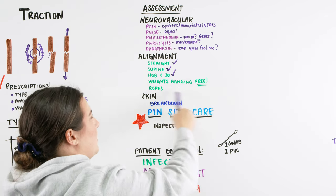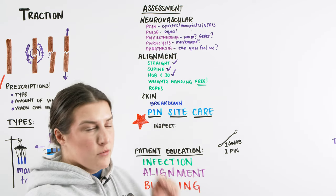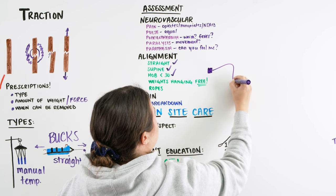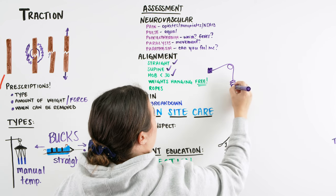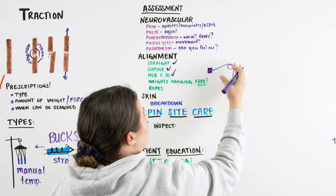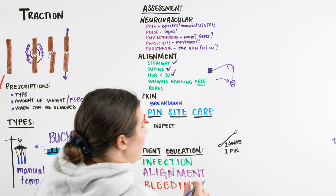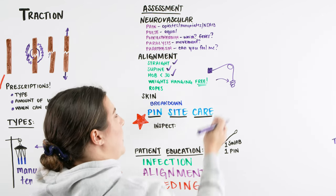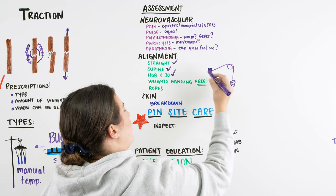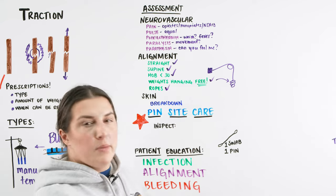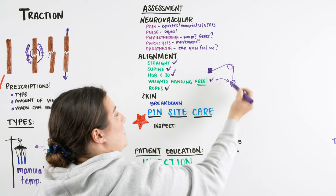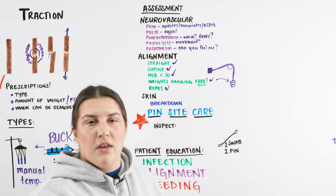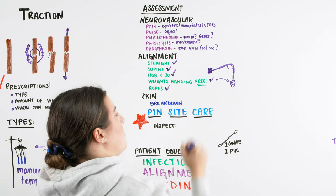The NCLEX really likes to hit on this: are the weights hanging free? In Buck's traction, the weights creating tension must not be resting on the bed, touching the floor, or squished between the mattress and frame — we are looking for free-hanging weights. We also need to check the ropes or cords creating that tension: the rope should be taut, not loose, and should not be fraying. Any issues with the rope should be reported to the provider.